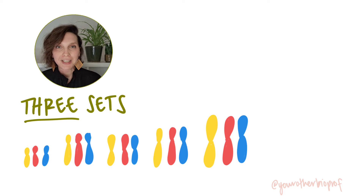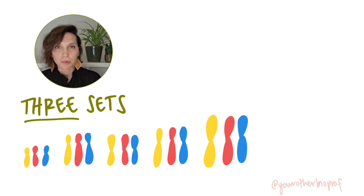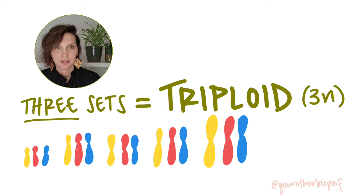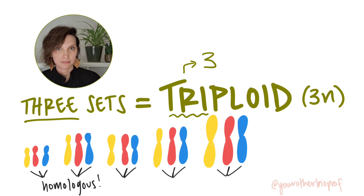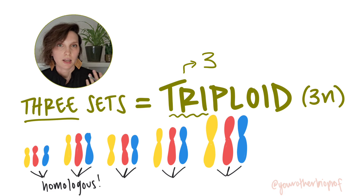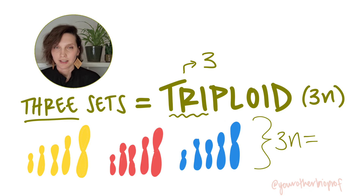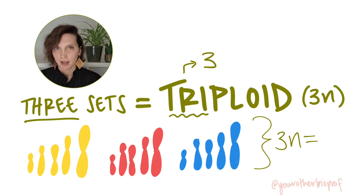A cell with three complete sets of chromosomes would be a triploid cell. The prefix 'tri' means three, so three sets of five different chromosomes. In our example here, 3n equals 15 — three sets of five different chromosomes for a total of 15.